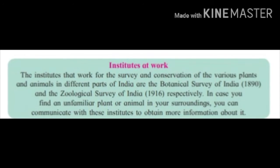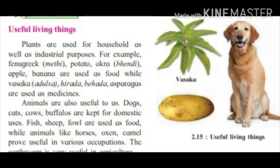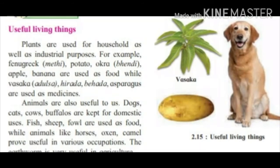Plants are used for household as well as industrial purposes. For example, fenugreek (methi), potato, okra (bendi), apple, and banana are used as food, while vasaka (adulsa), hirada, behada, and asparagus are used as medicine. Animals are also useful to us — dogs, cats, cows, and buffaloes are kept for domestic use, while fish, sheep, and fowl are used as food.